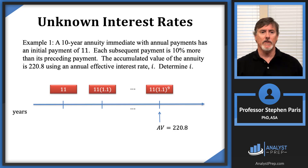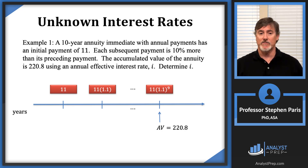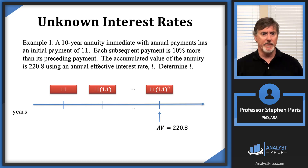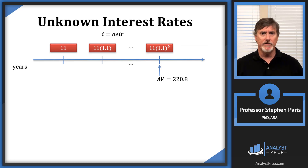On my timeline it's a 10-year annuity immediate and the accumulated value is 220.8. Since it's an annuity immediate, the accumulated value is at the time of the last payment, so that's why the valuation date is at the last payment. The first payment is 11, the next payment is 10% more, which is 11 times 1.1, and so forth. I is the annual effective interest rate that I'm seeking.